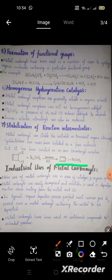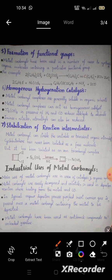Industry uses metal carbonyls primarily in the areas of catalysis and organic synthesis. Metal carbonyls are easily decomposed and volatilized, so they are used in vapor deposition reactions where heating releases the pure metal and carbon monoxide. In a typical vapor deposition process, a purified inert carrier gas is passed over a metal carbonyl. Metal carbonyls have also been used as anti-knock compounds in unleaded gasoline.